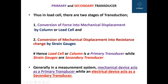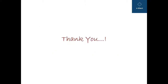Generally, in a measurement system, mechanical devices act as primary transducers while electrical devices act as secondary transducers. I hope the concept of primary and secondary transducers is clear to you. This video covers the LVDT, Bourdon tube, strain gauge, and load cell and how they are used as primary and secondary transducers. Thank you so much.